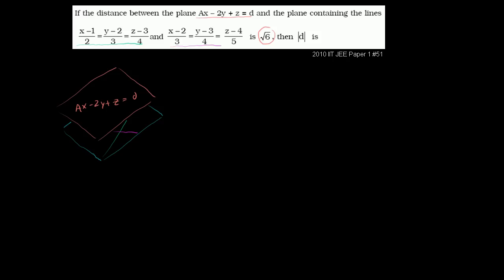Let's find points on the blue plane. On the green line, setting all parameters to 0 gives the point (1, 2, 3), which sits on the blue plane. Then setting parameters to 1 gives another point (3, 5, 7). Both of these points sit on the green line.